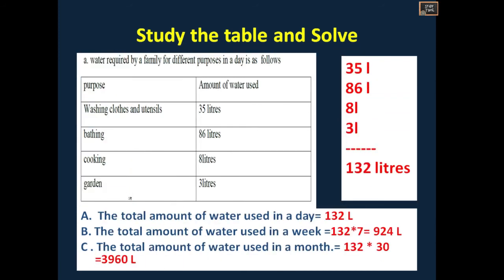First, you have to add the liters required for a family in a day. First, you have to add 35, 86, 8 and 3. 8 plus 3 is 11. So 35 plus 86 plus 11 is, you will be getting 9 plus 3 is 12 and 3 is 132. You will be getting 132 liters. The amount of water used in a day is 132 liters. The amount of water used in a week is 132 into 7. You will be getting 924 liters in a week.